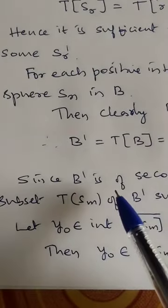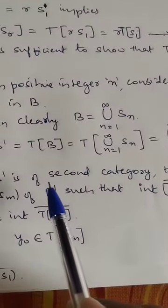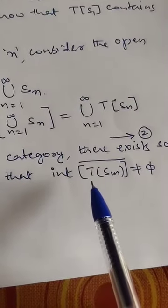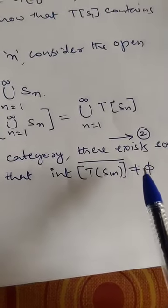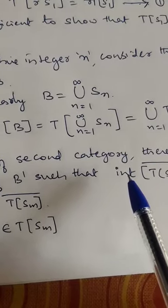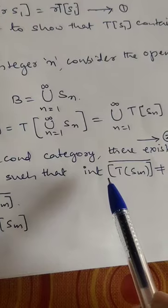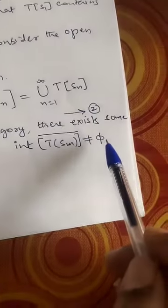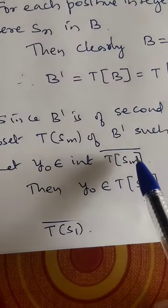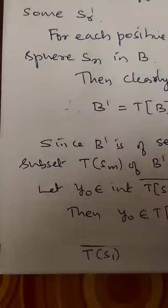Since B' is a complete metric space, it is of second category. Therefore it cannot be written as a countable union of nowhere-dense sets. Hence there exists some T(S_M) such that the interior of the closure of T(S_M) is not empty. Choose a point Y_0 belonging to the interior of the closure of T(S_M), so Y_0 is an interior point of T(S_M) closure.